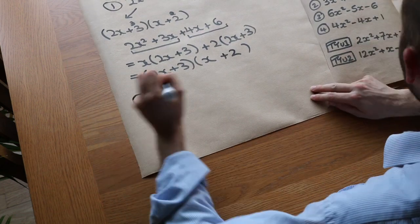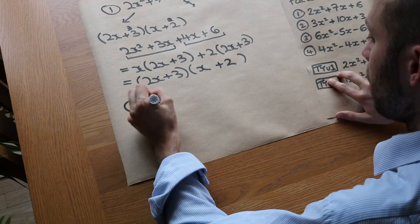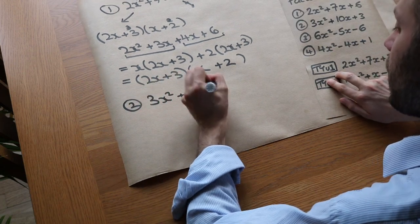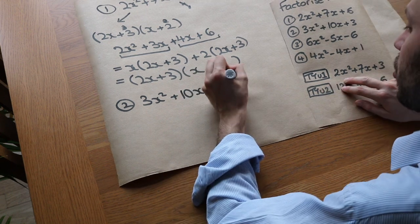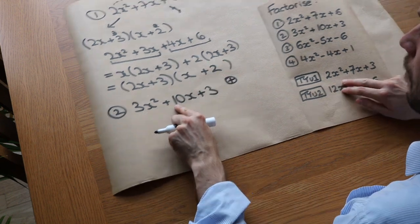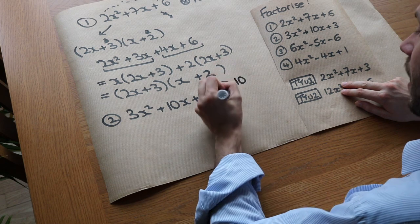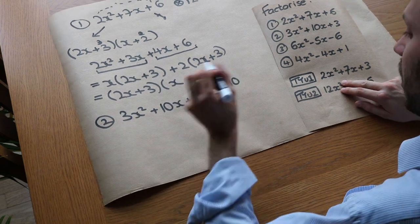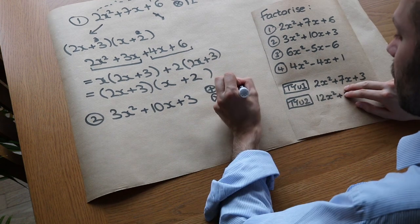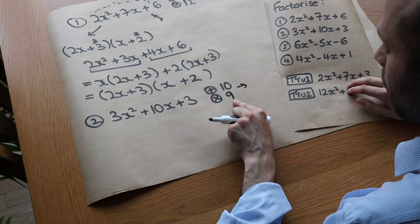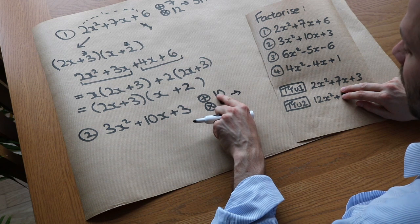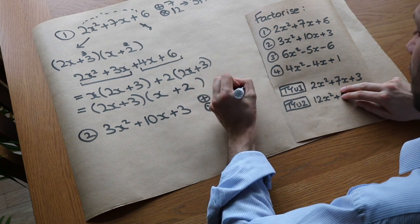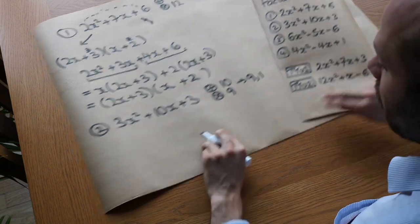Now I'm just going to use splitting the middle term. We've got 3X squared plus 10X plus 3. We want two numbers which add to give the middle number 10 and multiply to give the first times the last number: 3 times 3 is 9. What two numbers multiply to give 9? It could be 3 and 3 but they don't add to give 10. It could be 9 and 1, and they do in fact add to give 10. So let's use 9 and 1.